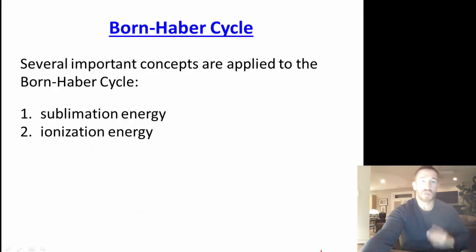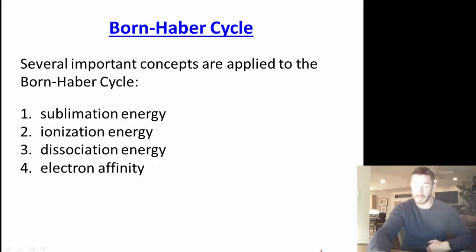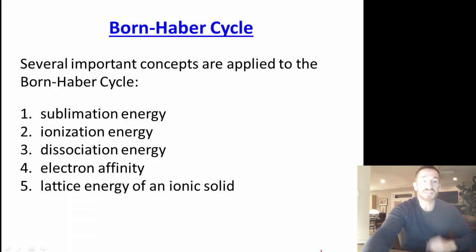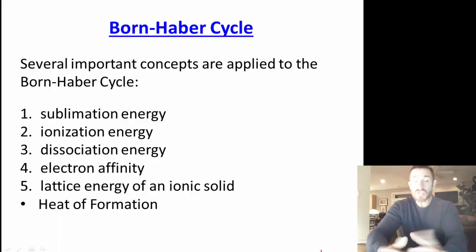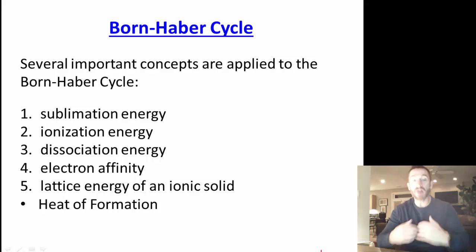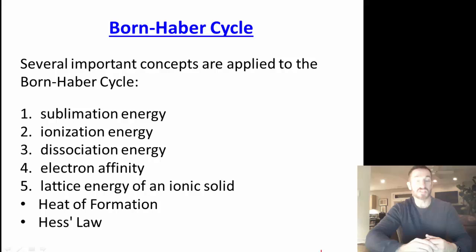Second, there's ionization energy. Third, there's dissociation energy. Fourth, there's electron affinity, and of course there's energy associated with that. Next, there's lattice energy of an ionic solid. And we're going to use all these to get the heat of formation of the ionic compound, using Hess's law.